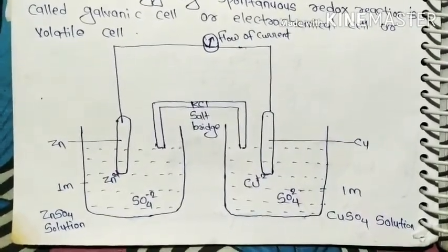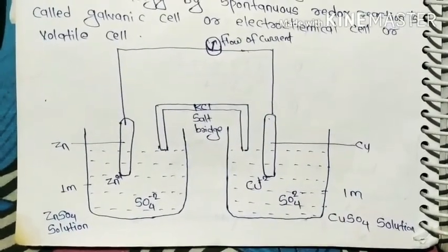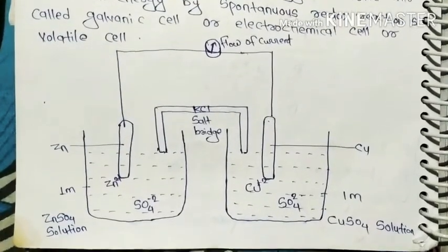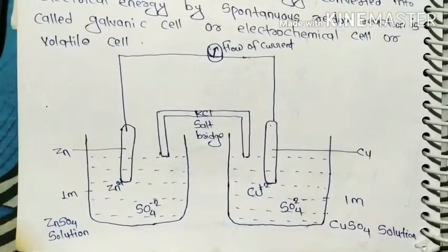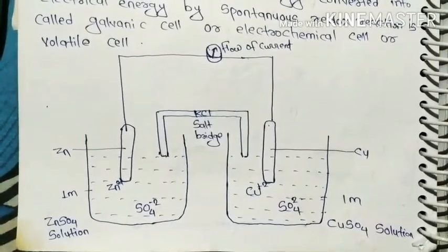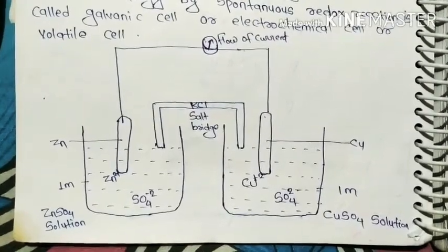Now let's see another tube which is connected to both solutions. This will be called salt bridge, which will contain potassium chloride and jelly. Let's see what happens here. I will explain this whole concept. You can understand everything.